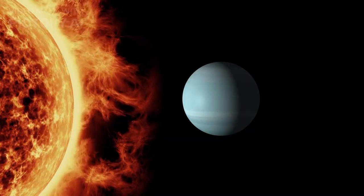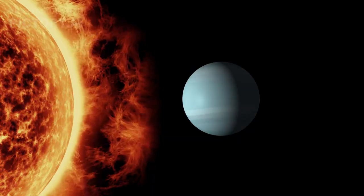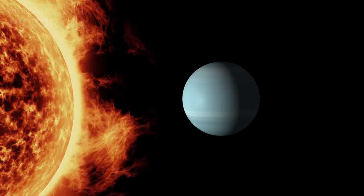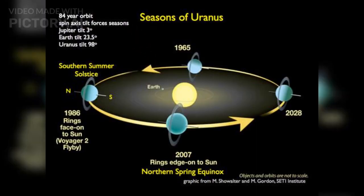For 21 years, one of Uranus's poles is locked in a constant, unbroken gaze at the Sun, basking in continuous daylight. But then, as the planet continues its orbit, that same pole is plunged into 21 years of total darkness, while the other pole takes its turn in the Sun's glare.